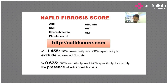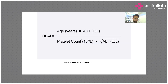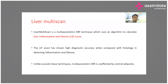Another score is the FIB-4 score. If the FIB-4 score is more than 3.25, that warrants a liver biopsy for these patients. Regarding the role of MRI, liver multi-scan is a multi-parametric MRI technique which uses an algorithm to calculate the liver inflammation and fibrosis score.